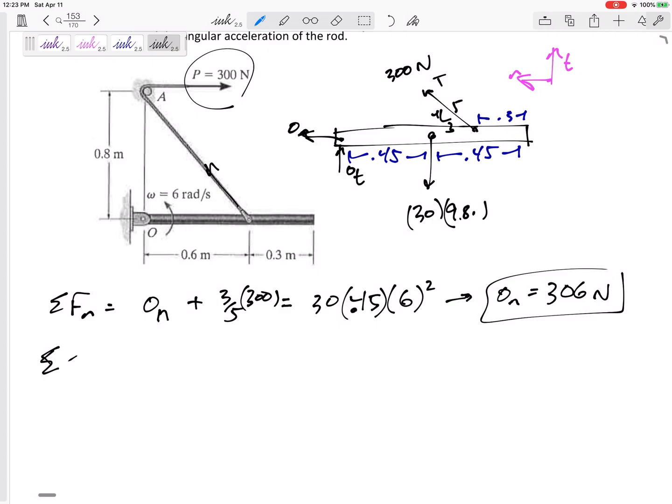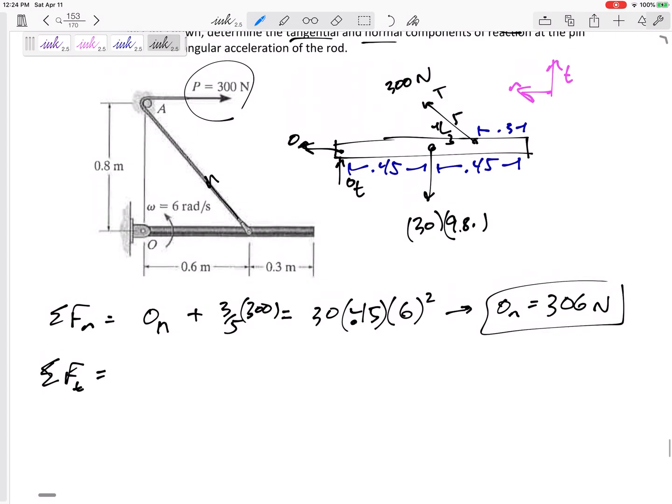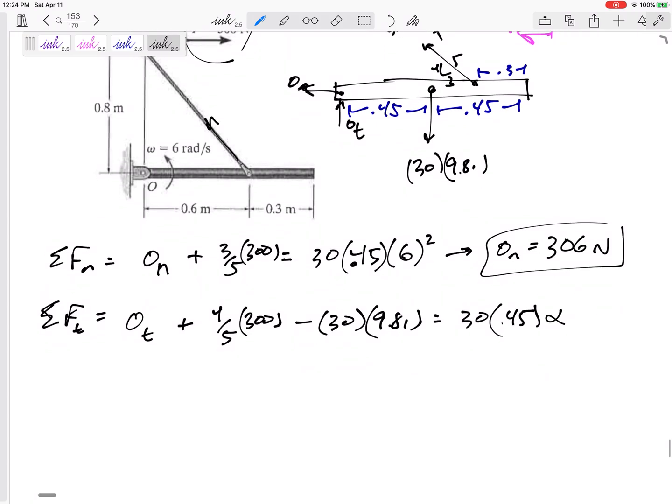Summing the forces tangential. Summing the forces in the up direction, right? O tangential. The four fifths component of the tension of 300 minus the weight equals M A tangential. What is A tangential? A tangential is R alpha. That one has two unknowns.